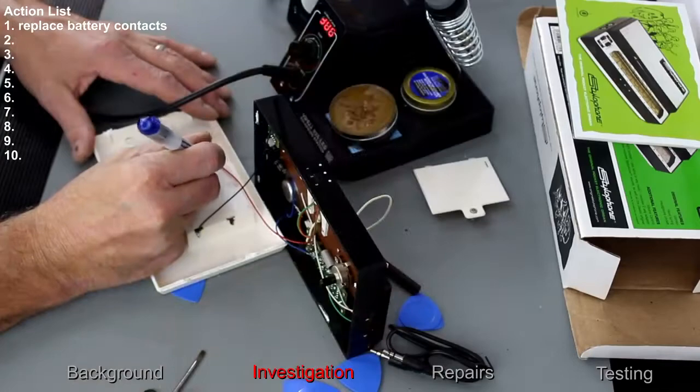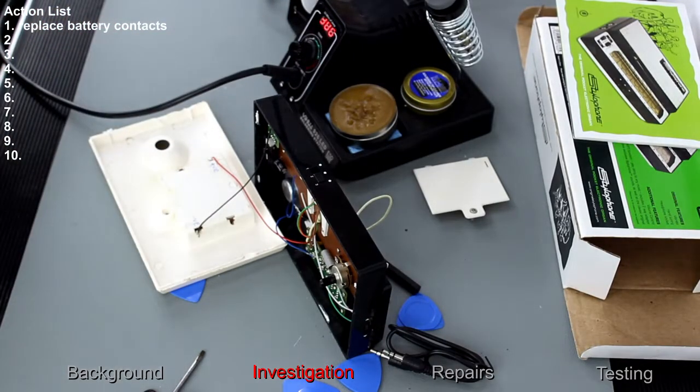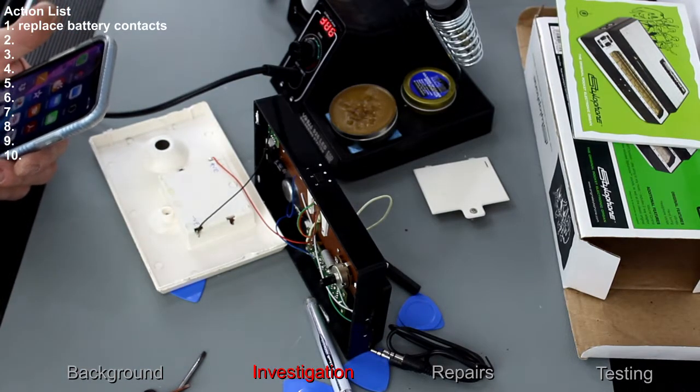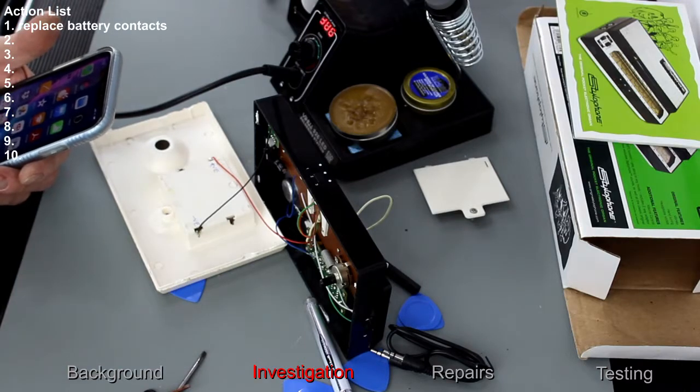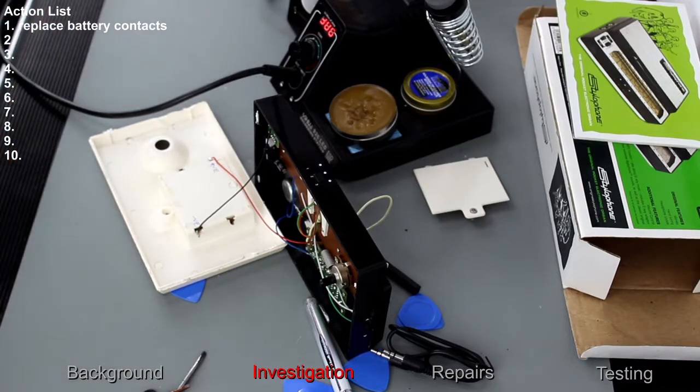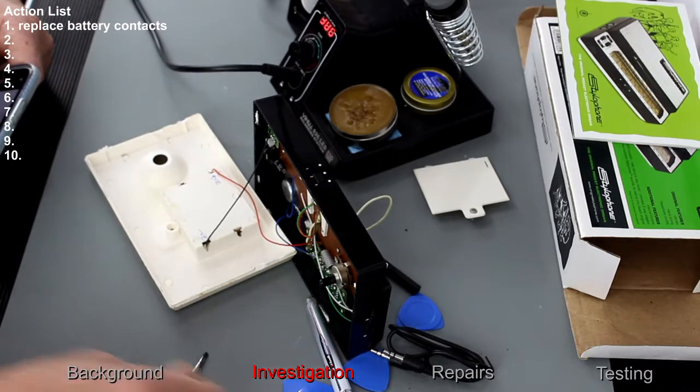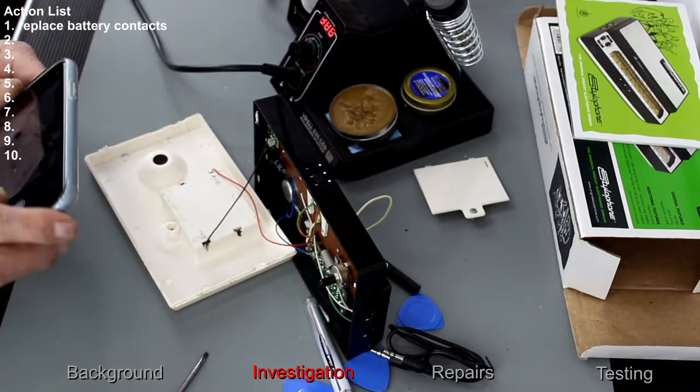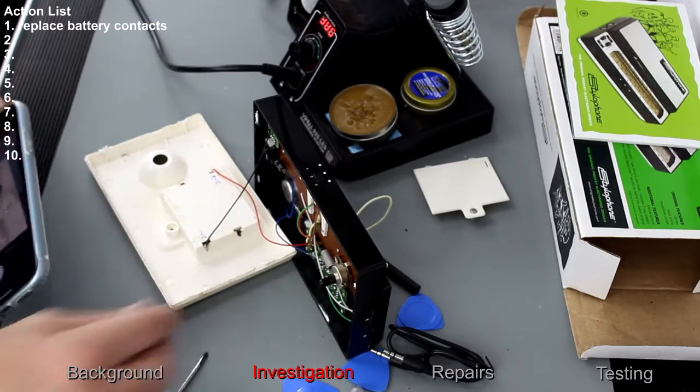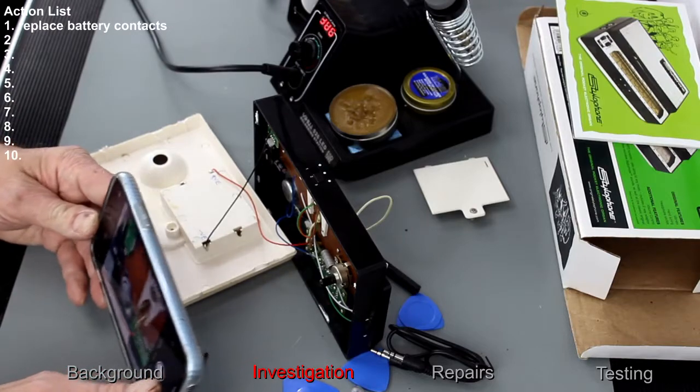I've marked positive and negative with pen, though it will rub off a bit too easily. What I'll also do is take a couple of pictures. It's always good to try and remember, can't always remember where exactly everything is. I'll take a picture of that, and a picture of the board as well, in case some of these wires come off during playing about with it. I'll know exactly where to solder them back on.